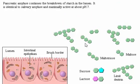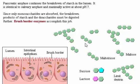Pancreatic amylase continues the breakdown of starch in the lumen. It is identical to salivary amylase and maximally active at about pH 7. Since only monosaccharides are absorbed, the breakdown products of starch and the disaccharides must be digested further. Brush border enzymes accomplish this job.